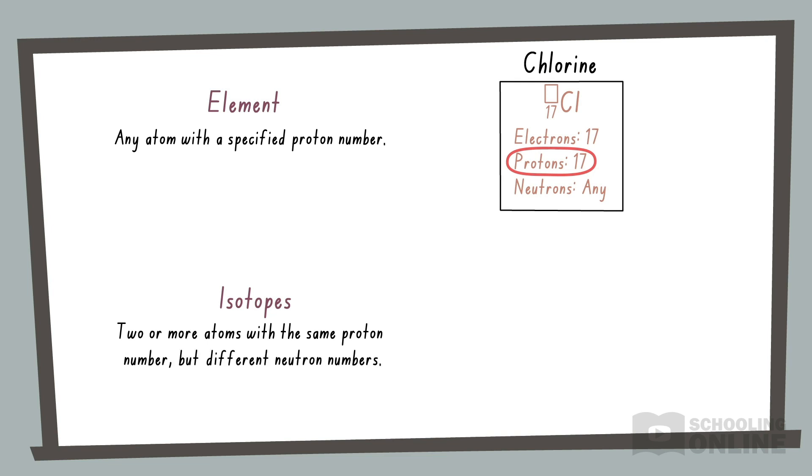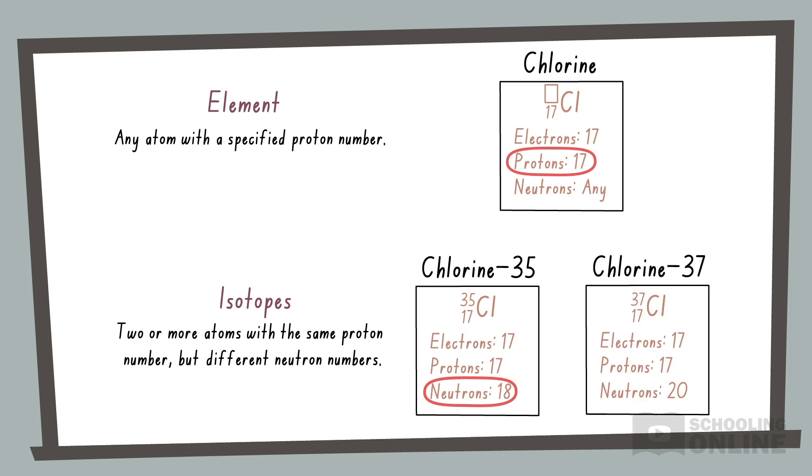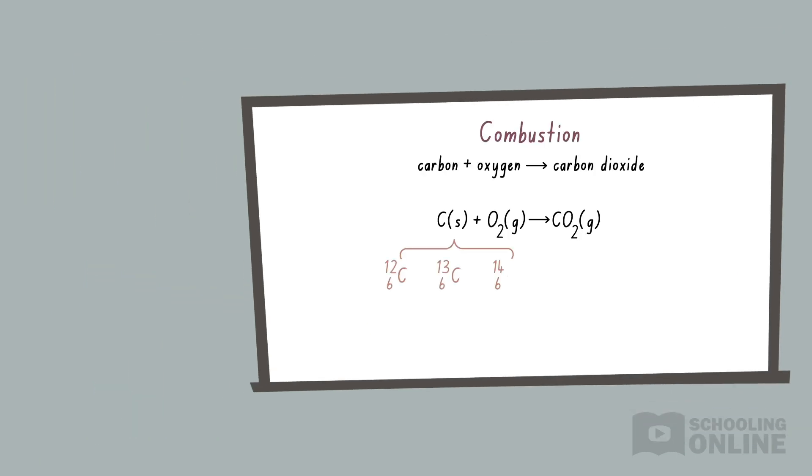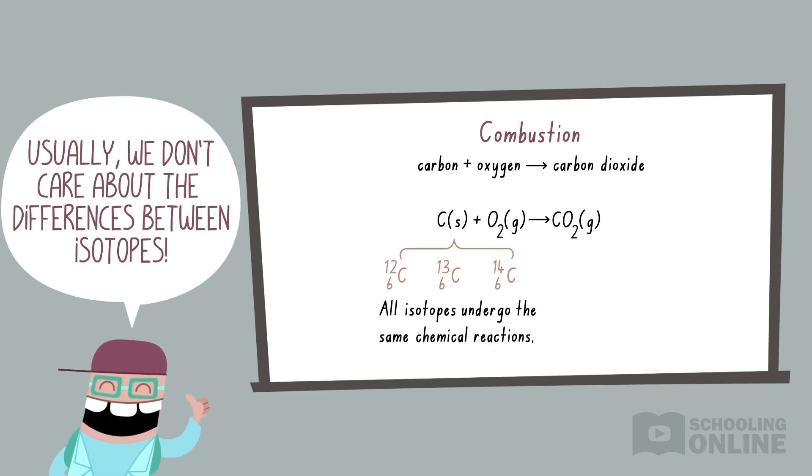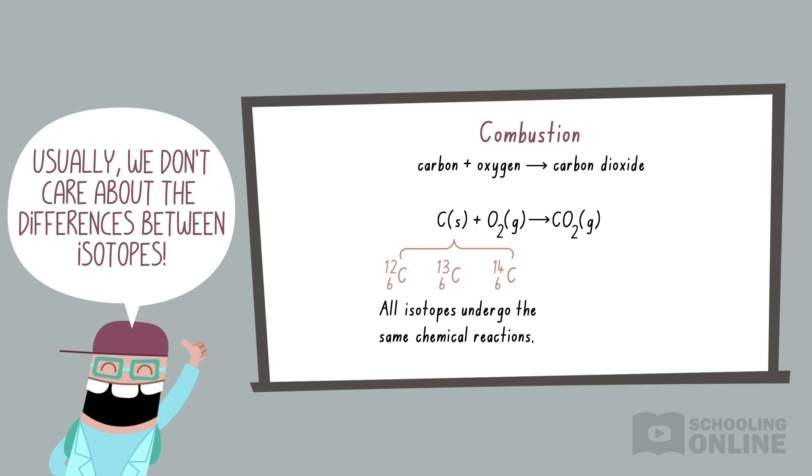Chlorine is commonly found in two different isotopes. Chlorine-35 has 18 neutrons, while chlorine-37 has 20 neutrons. Therefore, we can think of isotopes as different varieties of the same element. Furthermore, all isotopes of an element undergo the same chemical reactions. In HSC chemistry, we usually don't care about the slight differences between isotopes. This is why we classify atoms into the periodic table of elements instead of a periodic table of isotopes.